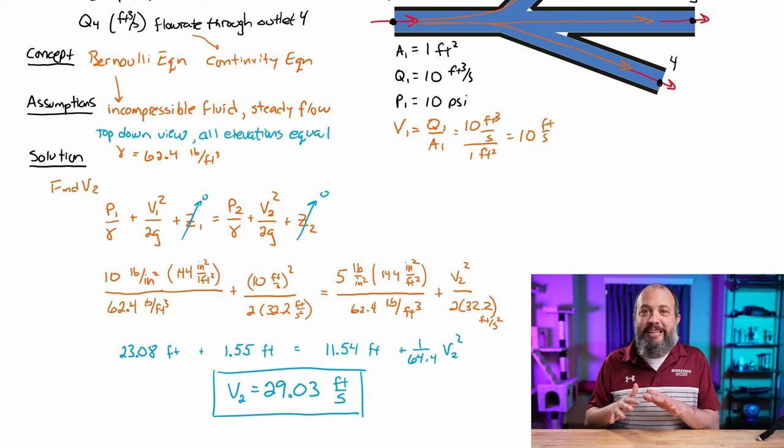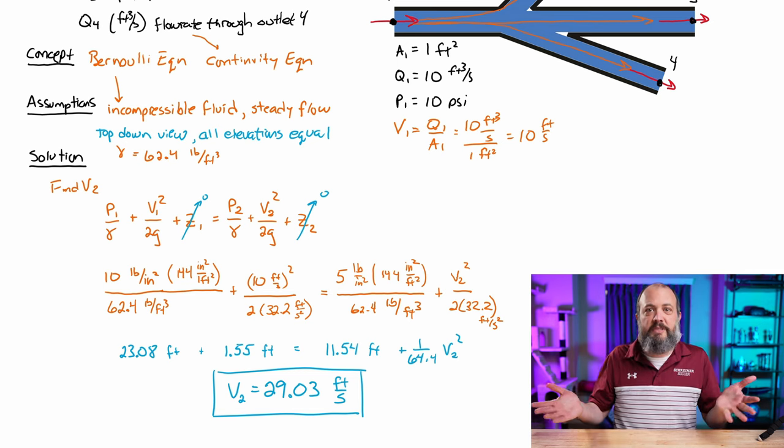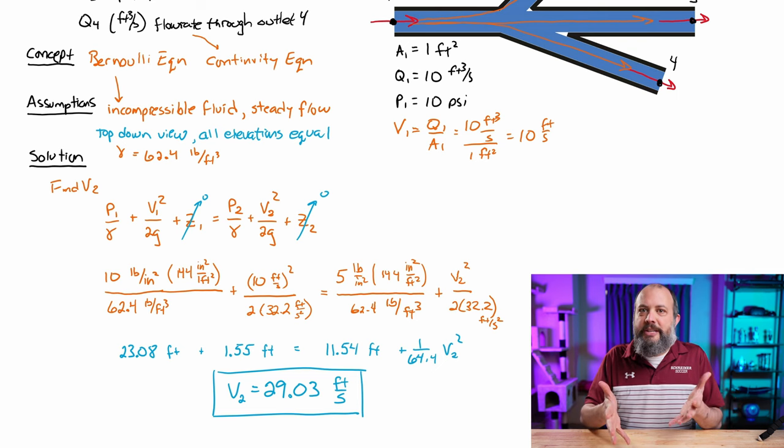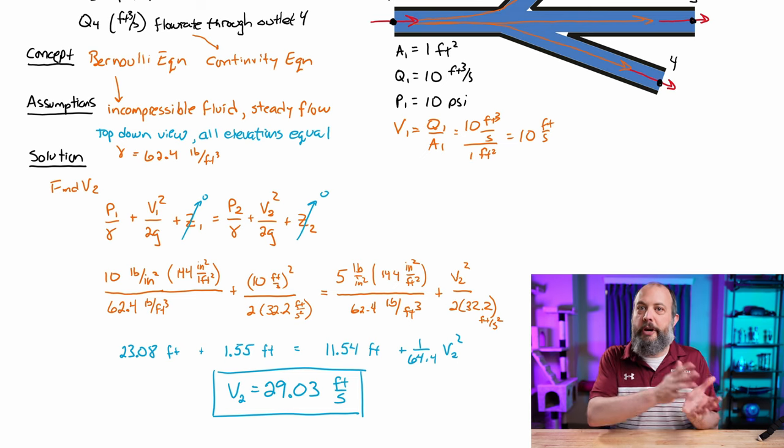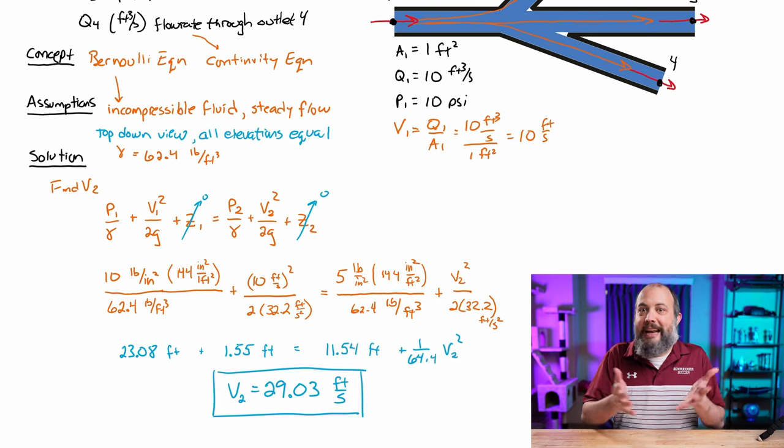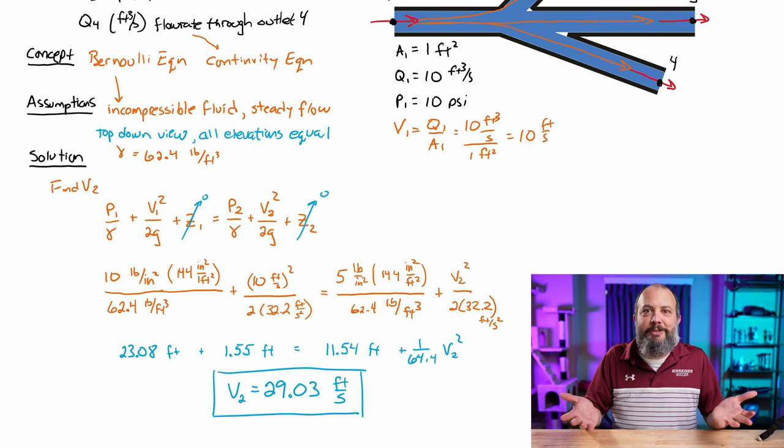Now this is almost three times as fast as the water was going through point 1. Does that make sense? So think conservation of energy. We've got energy stored in three forms: pressure, velocity, height. The height energy is exactly the same. Since the pressure went down from point 1 to point 2, that means that energy had to go somewhere, means velocity had to go up. So a velocity to greater than 10 does make sense.